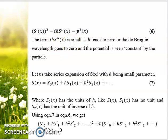In equation 6, we have the term with iℏS''(x), which is supposed to be small as ℏ tends to zero. Let us take the series expansion of S(x) with ℏ being a small parameter: S(x) = S₀(x) + ℏS₁(x) + ℏ²S₂(x) and so on. Where S₀(x) has the units of ℏ, S(x) is written in units of ℏ. S₁(x) has no unit, and S₂(x) has the unit of inverse of ℏ.